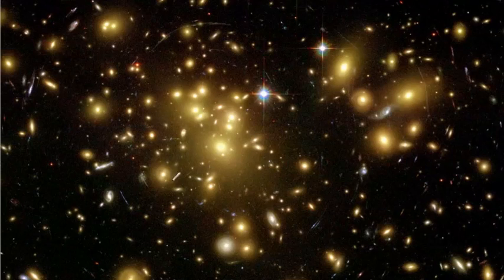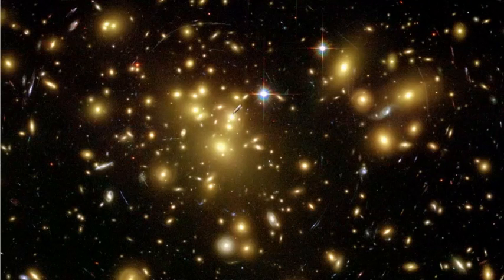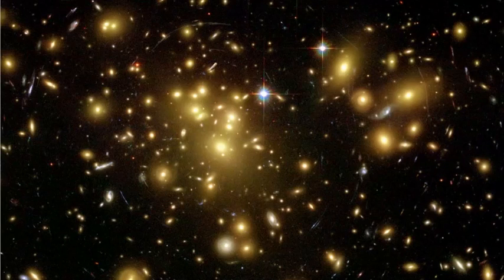What's happening is matter - in this case these galaxies - is causing spacetime to bend. We're seeing the light from maybe something behind it or to the side of it being lensed.